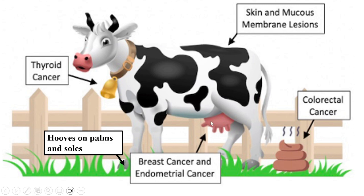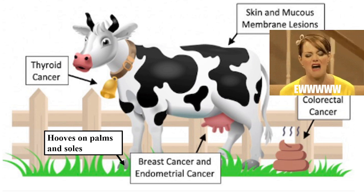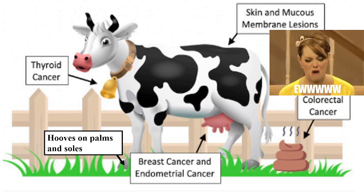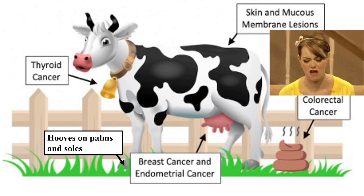Cow's milk is a rich source of protein, dairy, and meat, and here cow's milk stands for breast cancer and fibrocystic disease of the breast, which usually affects females with Cowden Syndrome. We started with the moo, so now comes the poo — this helps us remember that Cowden Syndrome can also be associated with colorectal cancer and hamartomatous GI polyps.